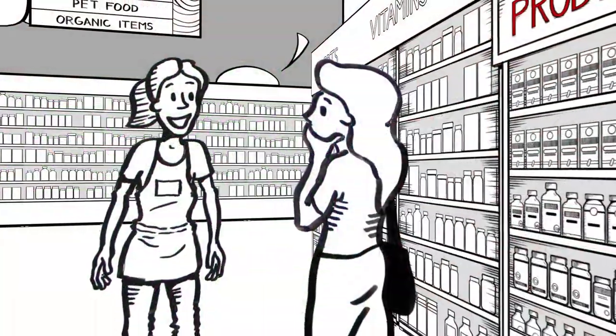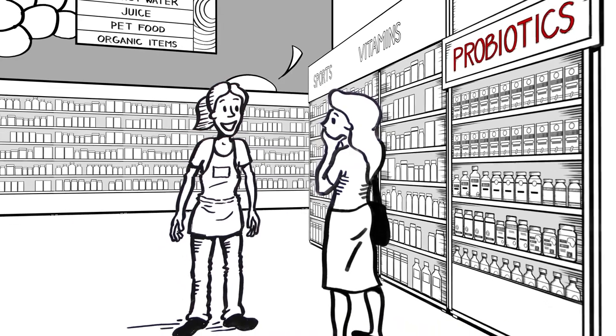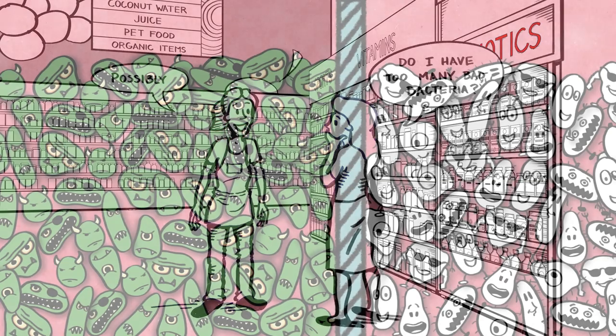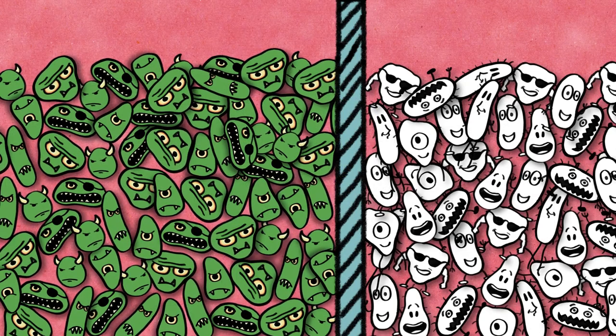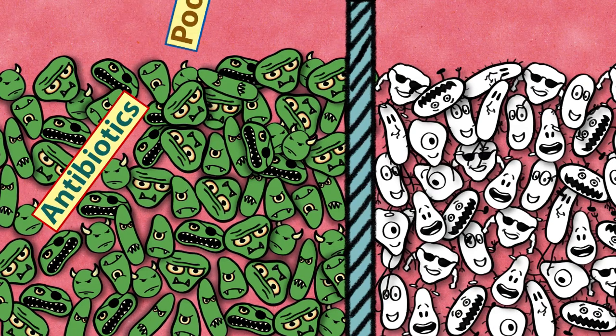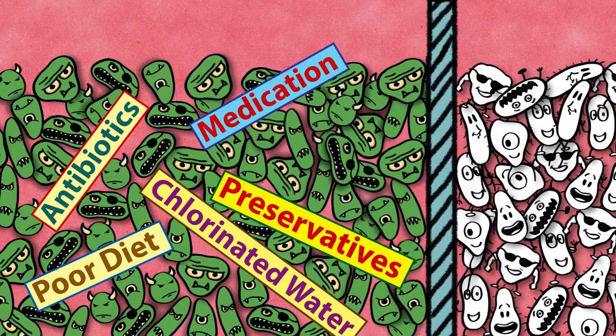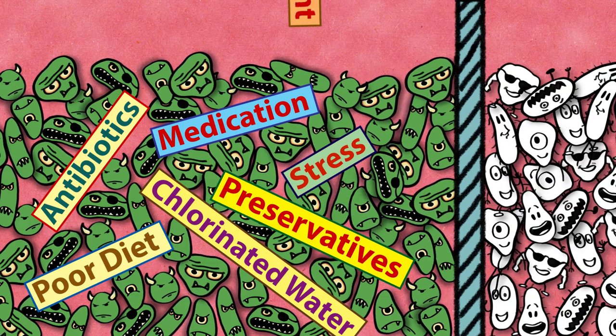So is that why I'm having digestive problems, she asked. Is it because there are a bunch of bad bacteria living in my gut? Possibly, I said. The balance of good bacteria to bad bacteria can be upset by a number of things, including antibiotics, poor diet, chlorinated water, food preservatives, certain medications, stress, and other environmental factors.